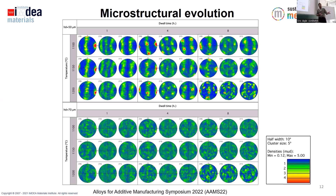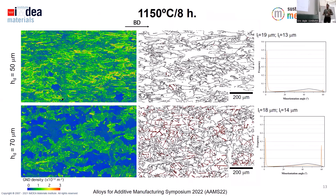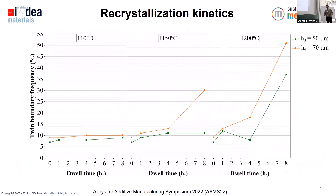It can be quite difficult to quantify the recrystallized fraction from the GND maps, but we can take the twin boundary peak frequency as an indicator of the degree of recrystallization. The twin boundaries are plotted in red in these maps. In recrystallized blue regions there are plenty of twin boundaries, whereas in non-recrystallized regions there are none. By taking this twin boundary frequency from the misorientation angle distribution, we can plot the evolution of recrystallization in both microstructures.